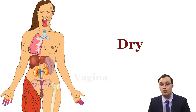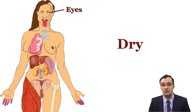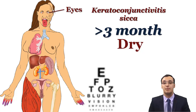Dry skin can be treated with lubricants. Dry vagina can cause dyspareunia, which is painful sexual intercourse, and this can also be helped with lubricants. Dry eyes, also called keratoconjunctivitis sicca, lasting more than three months is an important sign for Sjogren's syndrome. The patient usually complains of bad vision, photosensitivity, and irritation of the cornea.